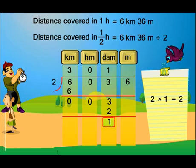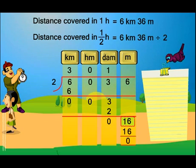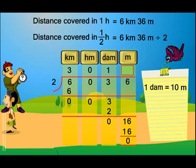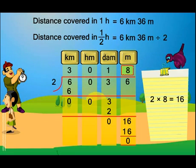Now what happens? 1 is carried forward to the meter column. And this 6, this becomes 16. Now we know that 1 decameter is 10 meters. So we get 8 here. The reason? Simple. 2 into 8 is 16. So this completes our division.